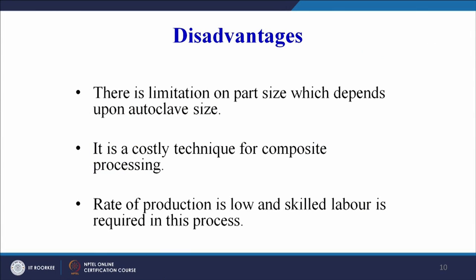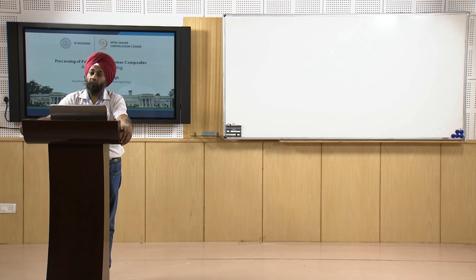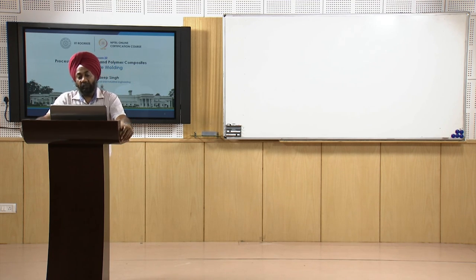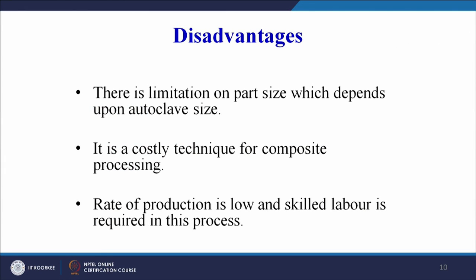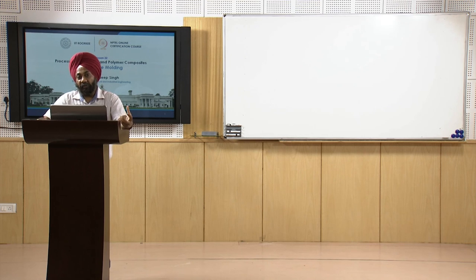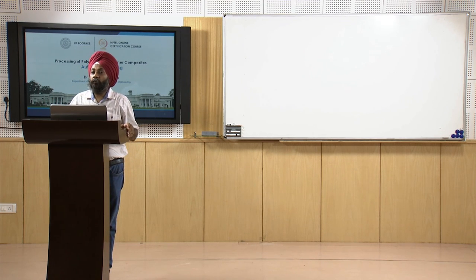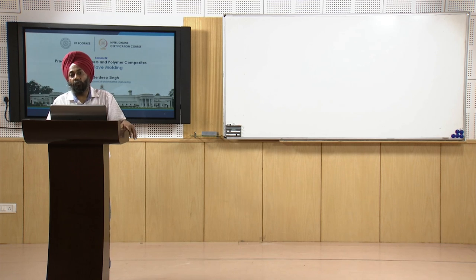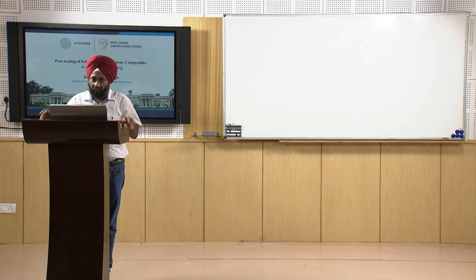Disadvantages of autoclaving: there is a limitation on part size which depends upon the autoclave size, so very large composite products cannot be made by this method — for those, hand layup or spray layup processes are preferred. It is a relatively costly technique for composite processing. The rate of production is low and skilled labor is required, since multiple parameters must be controlled: vacuum level, temperature, duration of heating, cooling rate, and applied pressure.